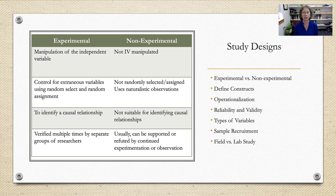We'll also look at types of variables — continuous or categorical — and what that means for what we report. Sample recruitment will be covered more in our survey chapter, which I think is chapter seven, and we'll also discuss the differences between field and lab studies.